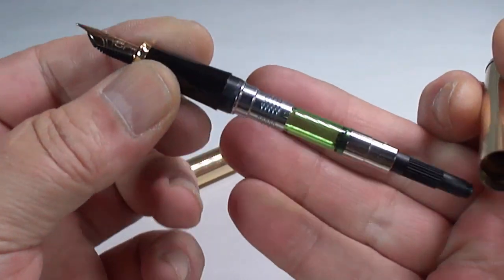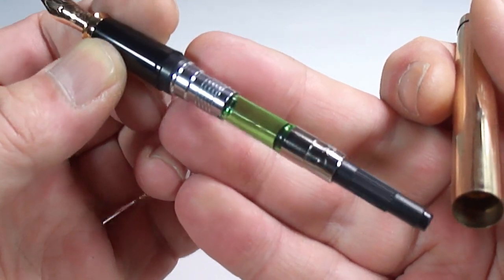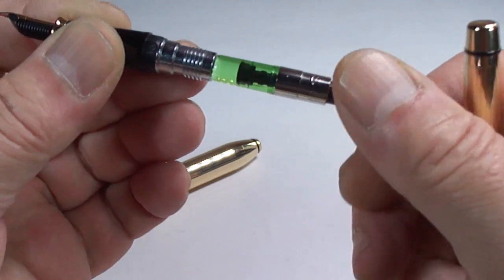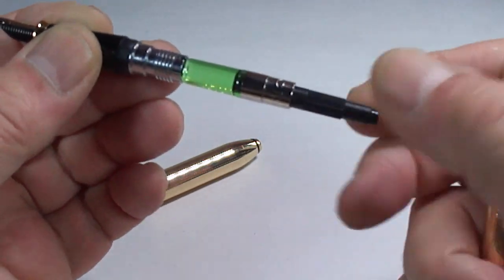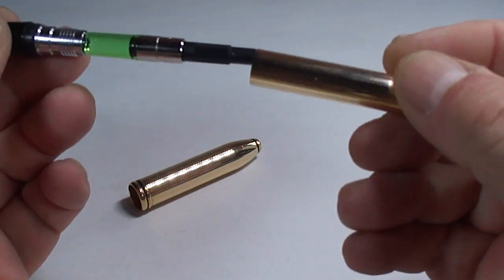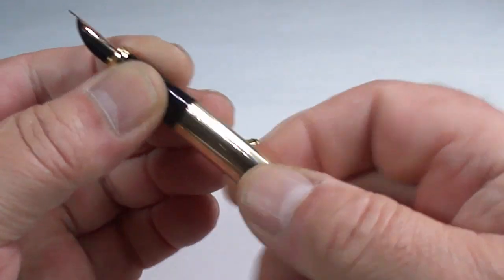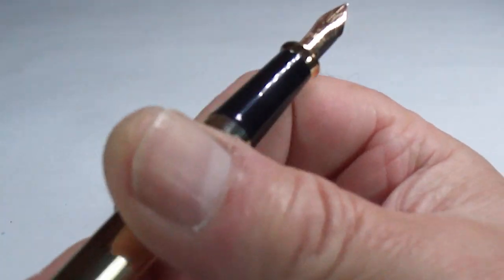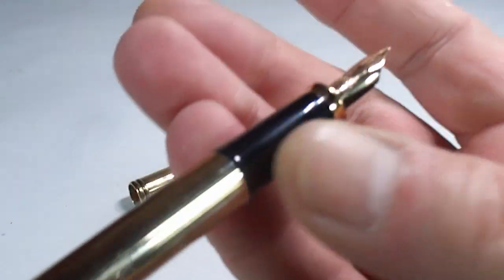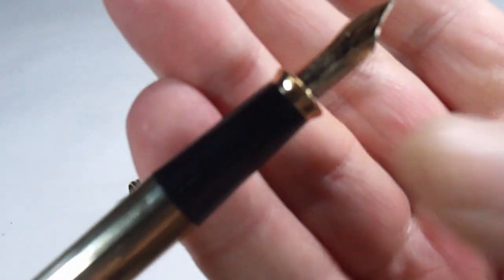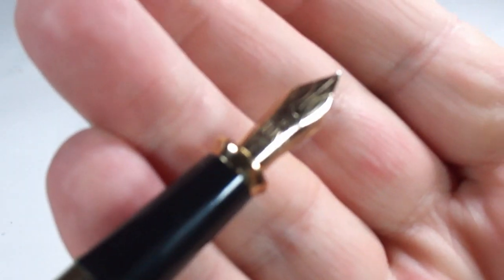You can see this one is fitted with a Cross converter. If we just turn that, you can see the plunger in and out there. They also take Cross cartridges as well, but I think most people prefer the converter. If we take you up to this section, you can see it's got quite a long section in black. It's got this gold band towards the nib there.